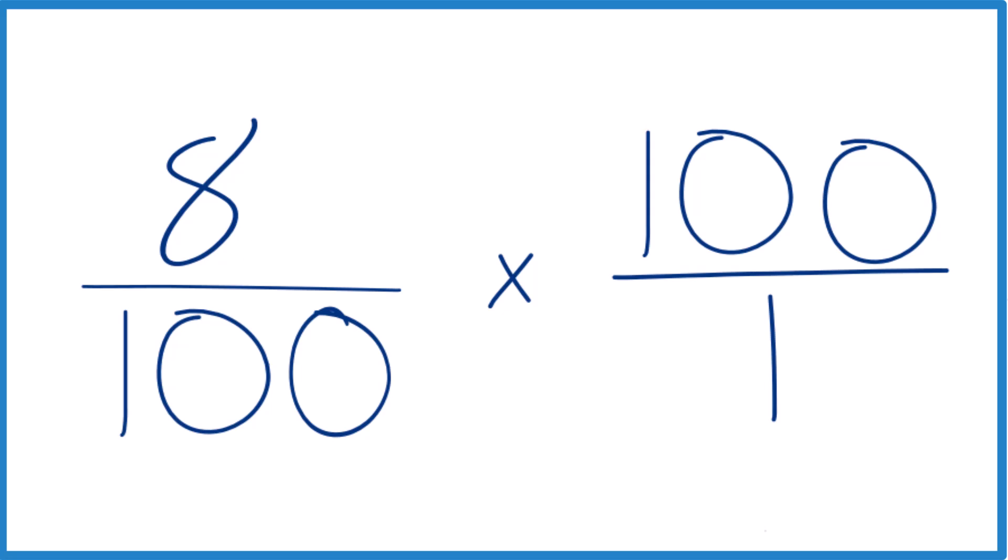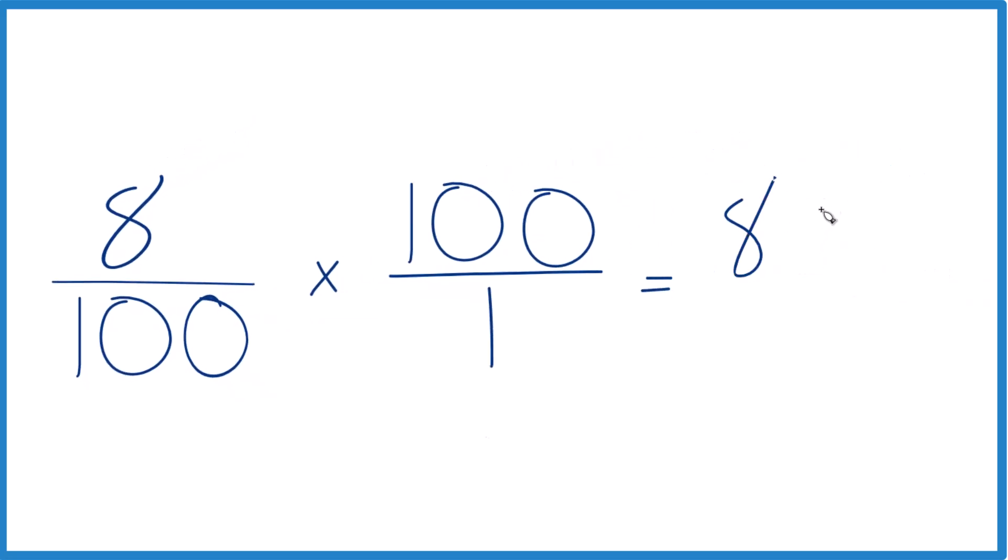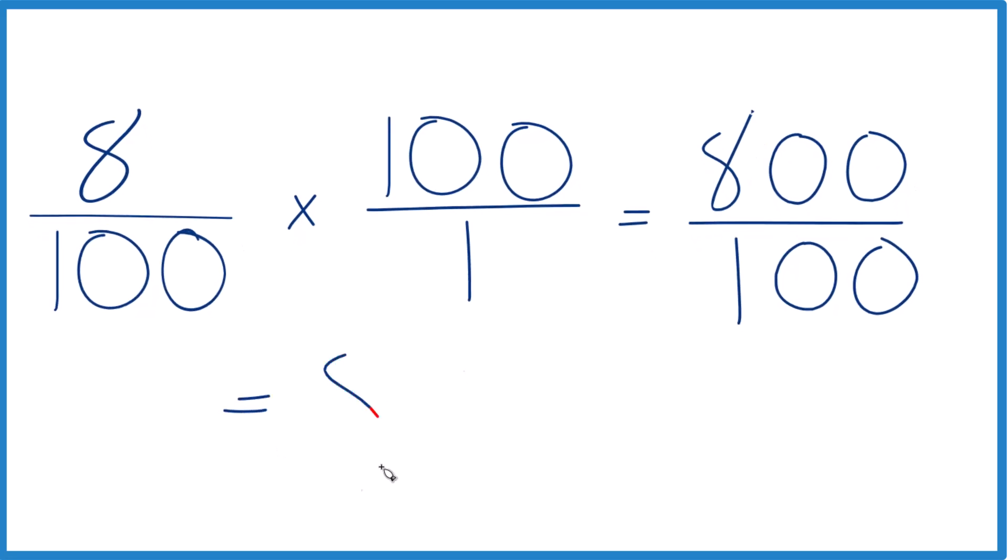When you multiply, you're going to end up with 8 times 100, that's 800. And then 100 times 1 is 100. So if you divide 800 by 100, you're going to end up with 8.